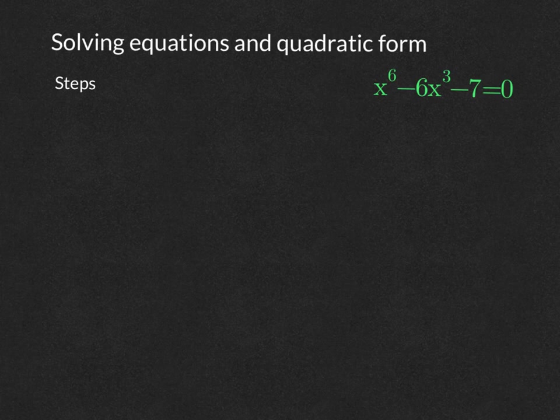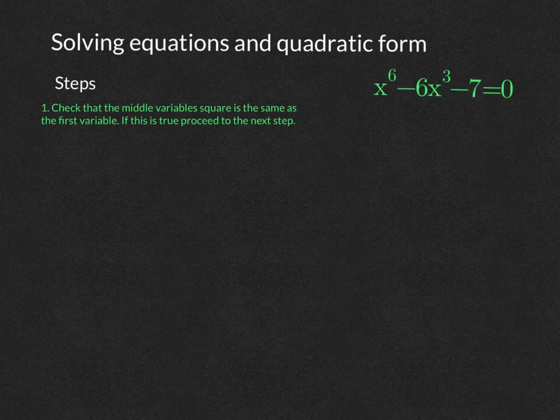Let's take a look at how to solve an equation that is not a quadratic equation but is in quadratic format. Step one is to check that the middle variable — in this case x cubed — when squared equals the first variable. Since x cubed squared is x to the sixth, that condition is true, so we proceed to the next step.